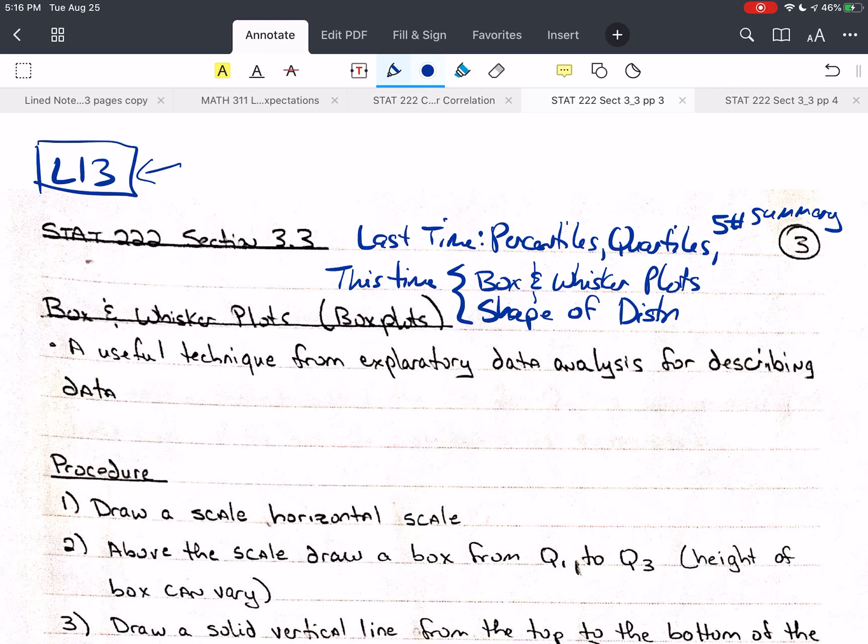And then we put together the minimum or lowest value, the quartiles, and the maximum or highest value of the data, and that gives us a five-number summary. And we said that we're going to do that for plotting. So this time we're going to talk about box and whisker plots, and we're going to use those to determine the shape of the distribution.